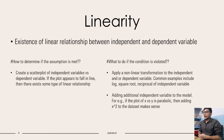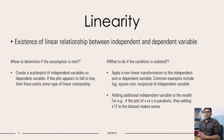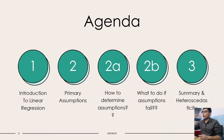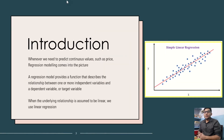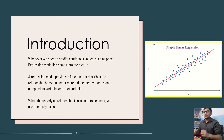The first is linearity — existence of a linear relationship between independent and dependent variables. Before going into these assumptions in detail, let us briefly revisit what we understand by linear regression. I believe most of you know about linear regression at this point, but just to keep the flow of the video constant, we shall cover it.